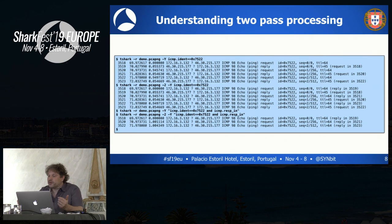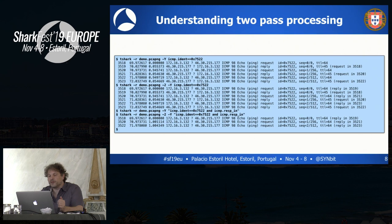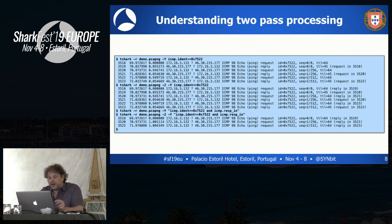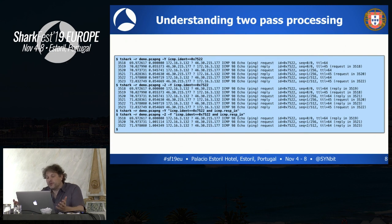What two-pass processing does is populate fields that reference the future. For example, in frame 3518 it might say 'reply in 3519' — that's something from the future that you can't see when you're at frame 3518. Some fields in Wireshark are only populated by having a two-pass process. So beware: if you need to extract something from your trace file that requires two-pass processing, you need to enable it in T-Shark. That also means, for example, if you want to filter on the ICMP response-in field, you can't do that without two-pass processing.